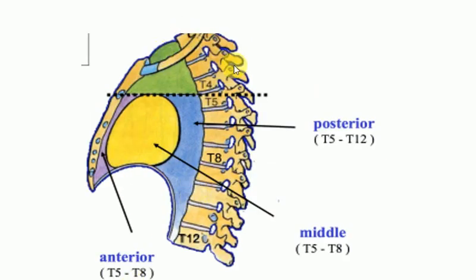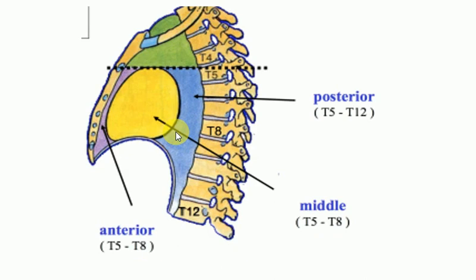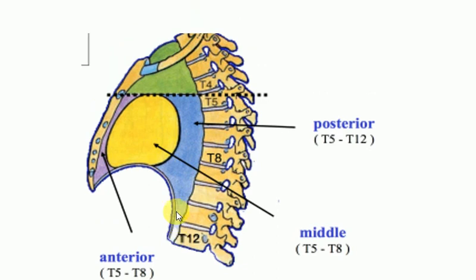This image shows the different parts of the mediastinum. The thoracic plane passing from the sternal angle to the lower border of T4 divides the mediastinum into superior mediastinum, shown in green, and inferior mediastinum. The inferior mediastinum is from T5 to T12 and is further divided into three parts: anterior, middle, and posterior. Anterior is behind the sternum from T5 to T8, the middle mediastinum is from T5 to T8, and the posterior mediastinum is from T5 to T12.